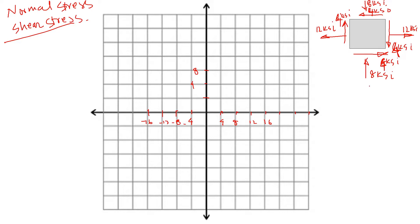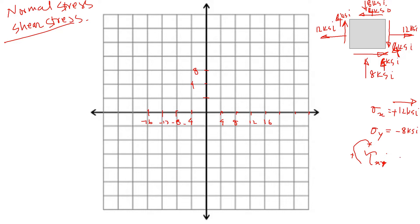We take a piece of cross-section from a member that has a normal stress of 12 KSI in the x direction, a shear stress of 4 KSI, and a compression stress in the y direction of 8 KSI. Because this is compression, we use a negative sign. Tension is positive. The shear stress tau x-y clockwise is positive, so on the x face we have a clockwise shear stress of positive 4 KSI. On the y face we also have 4 KSI, but counterclockwise, so that is negative 4 KSI.